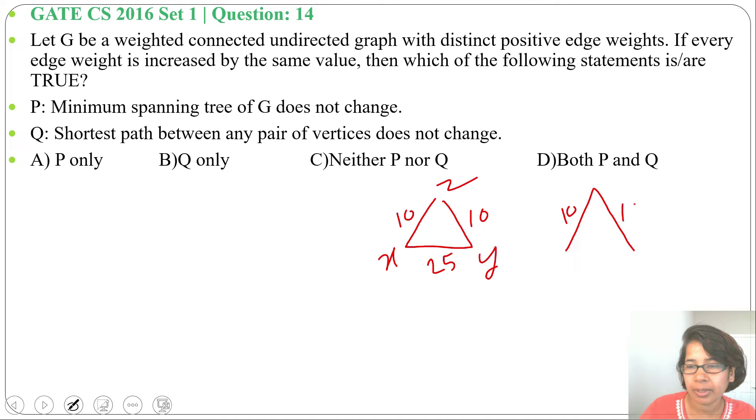If we increase every edge by 10, this weight will be 10 plus 10 equals 20. Here, YZ weight will be 10 plus 10 equals 20, and XY weight will be 25 plus 10, which is 35. Now if we construct the minimum spanning tree, it will be the same: X, Y, Z will include these two weights.